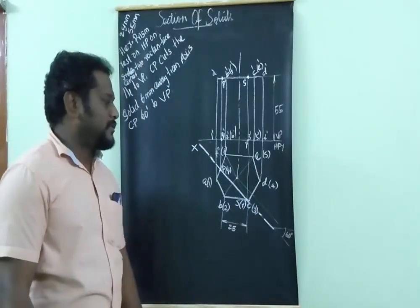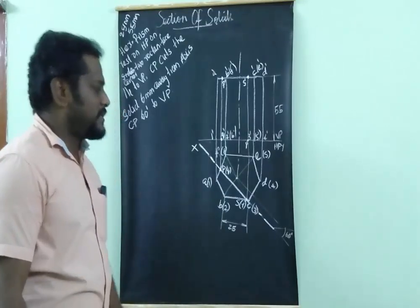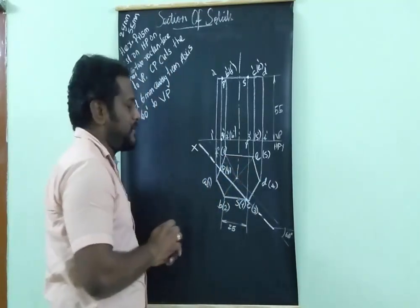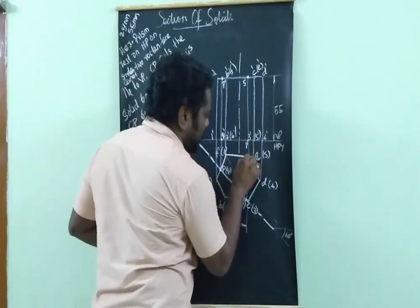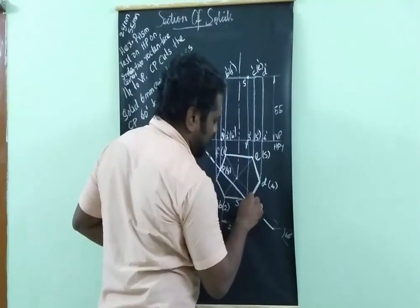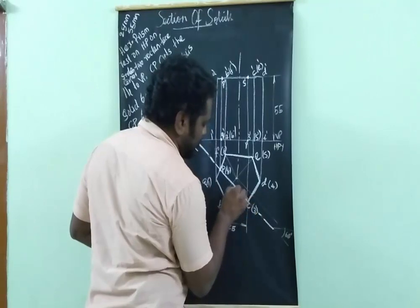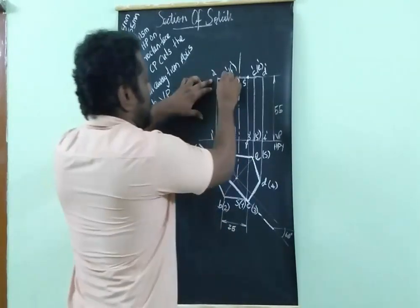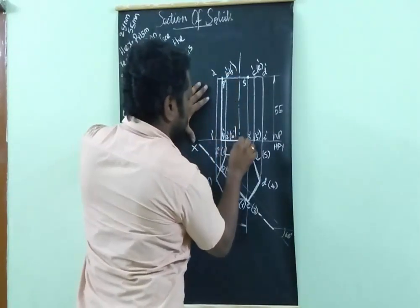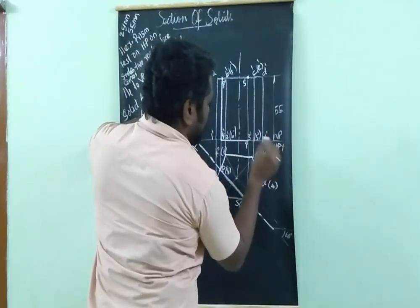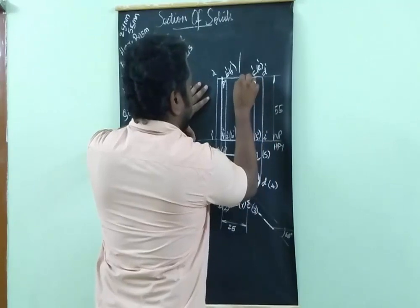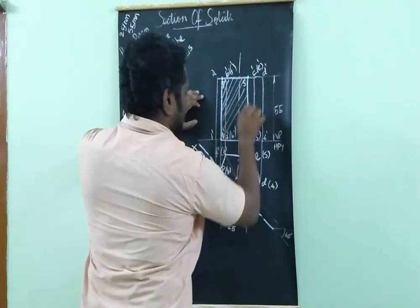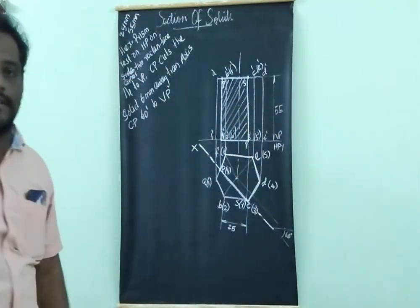Now draw the sectional views. For the sectional top view, this portion gets removed and this portion remains. With an H pencil, make all these lines — this will be your sectional top view. Then draw the sectional front view by connecting points P, Q, R, S and drawing hatching lines.